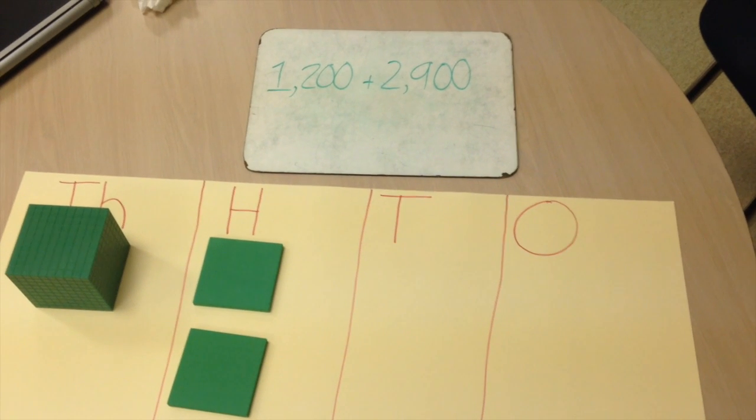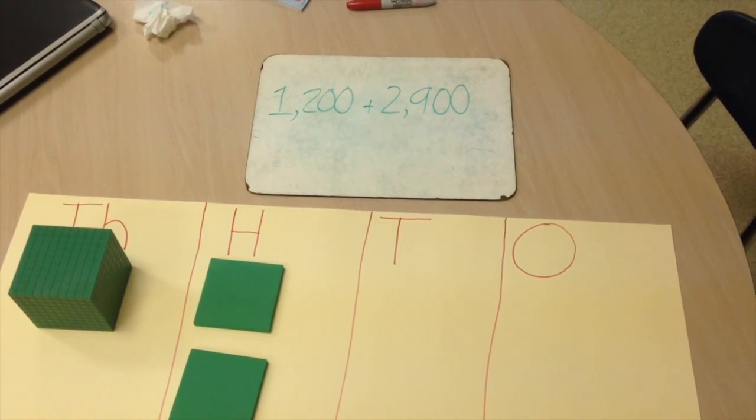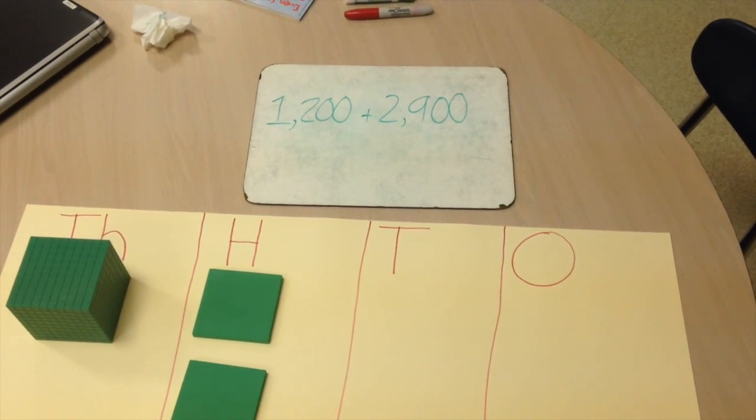For this problem, we're going to practice regrouping in the hundreds with an addition problem. We're going to add the number 1,200 plus 2,900.